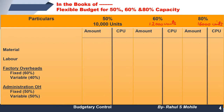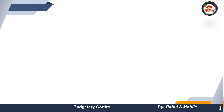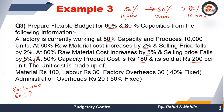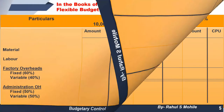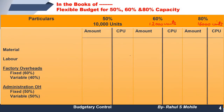First of all we are going to write material. Looking at the data, material is 100 rupees per unit and labor is 30 rupees per unit. Material per unit is 100, multiplied by 10,000 units gives 10,00,000. Labor is 30 per unit, multiplied by 10,000 gives 3,00,000.